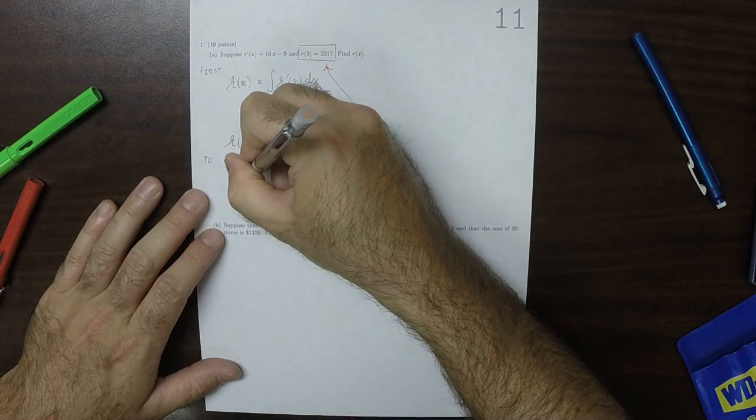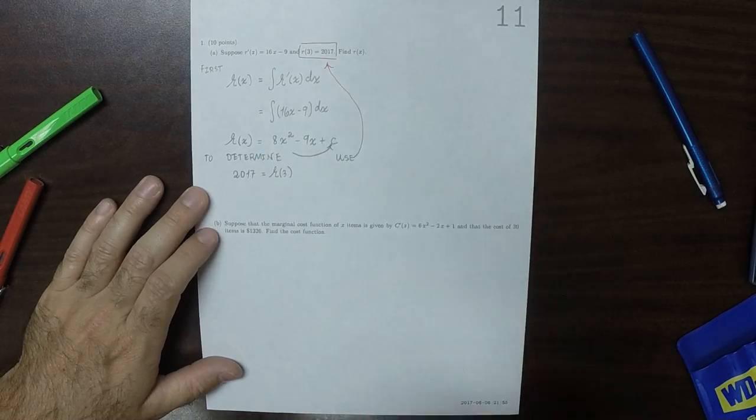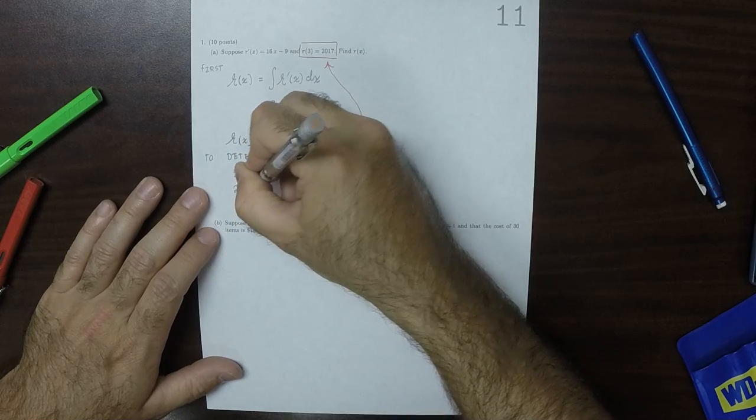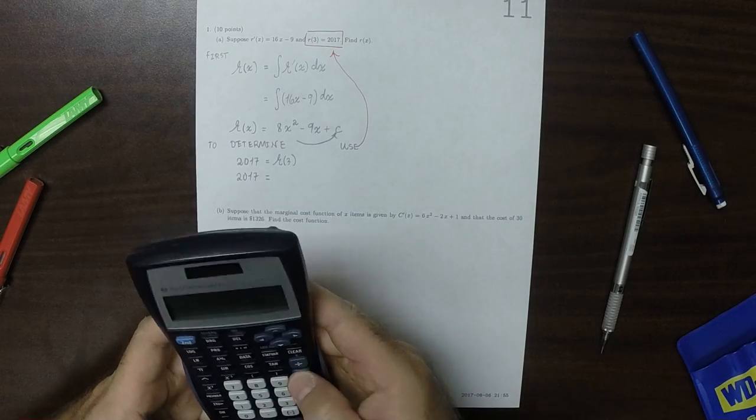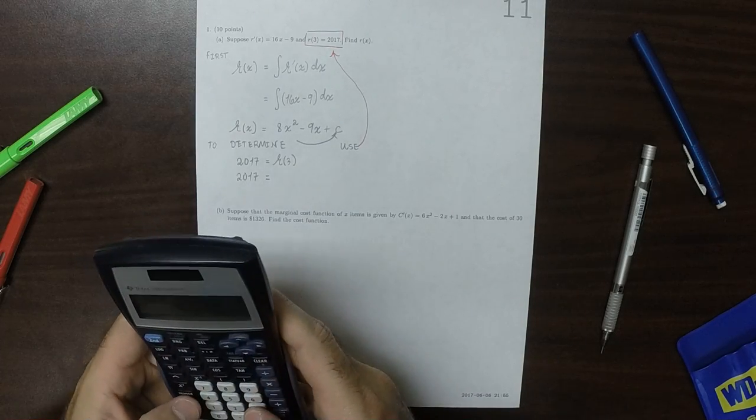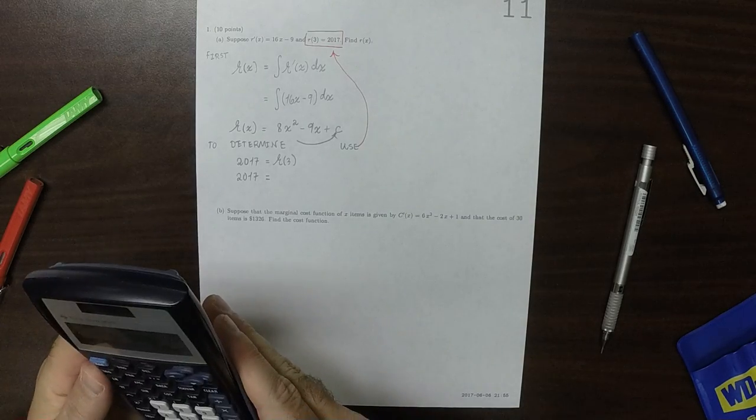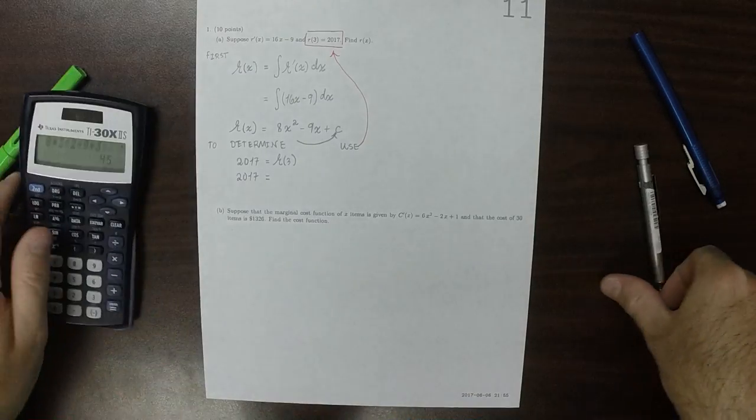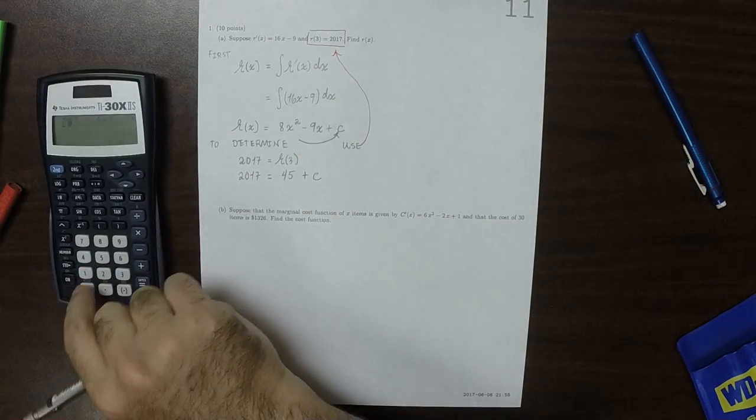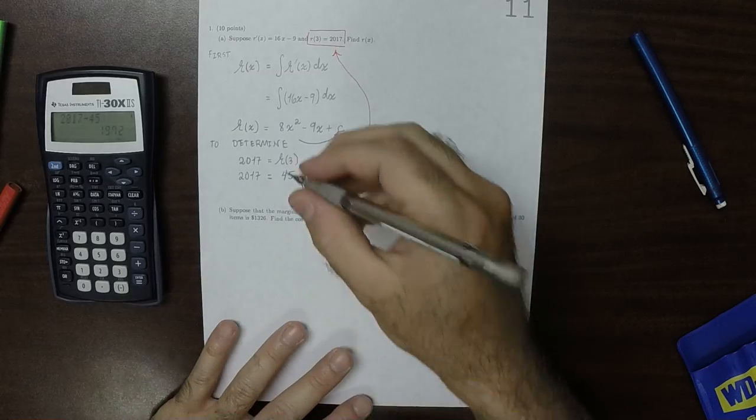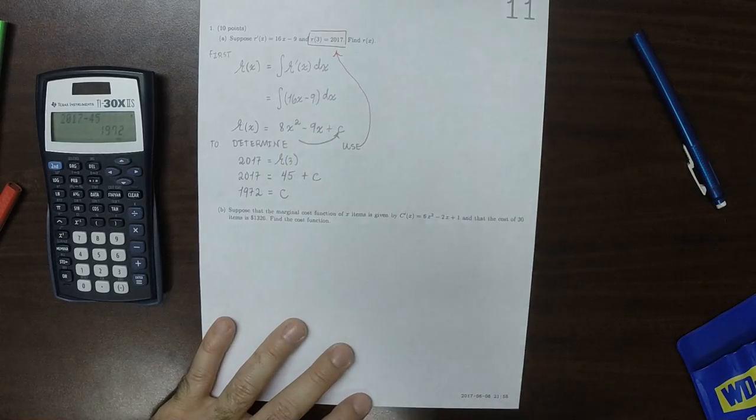So we're supposed to get 2017 when we plug in 3. And therefore, 2017 is, I'll plug in 3 there, and that's 8 times 3 squared, minus 9 times 3. So that's 45 plus c. And 2017 minus 45 is 1972. So that's the value of c.